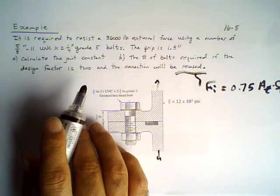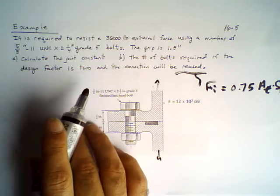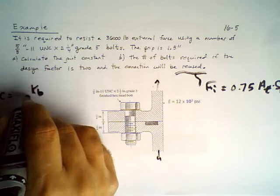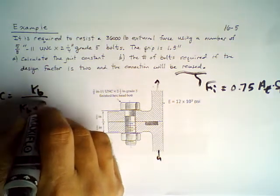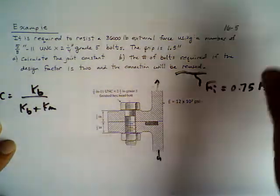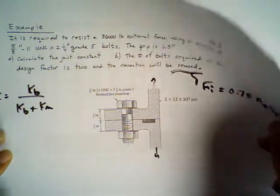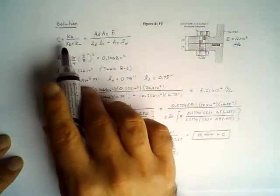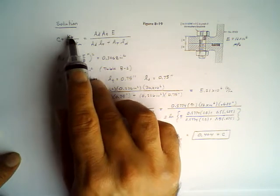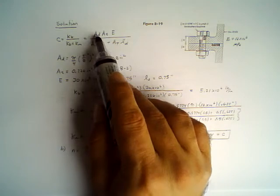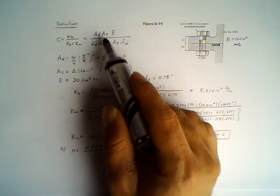We need to calculate the joint constant. We have an equation for the joint constant: C is going to be equal to kb divided by kb plus km. How do you know kb and km? We have equations for that. You're going to find Ad and At.